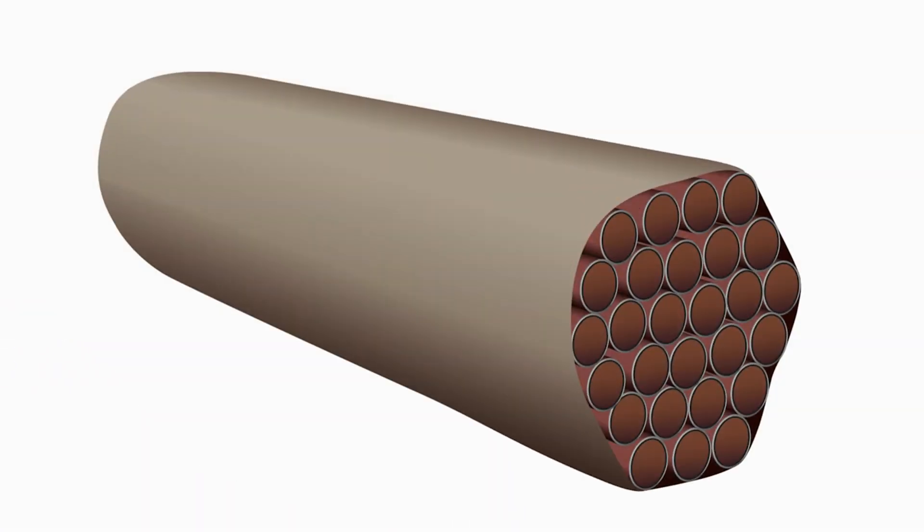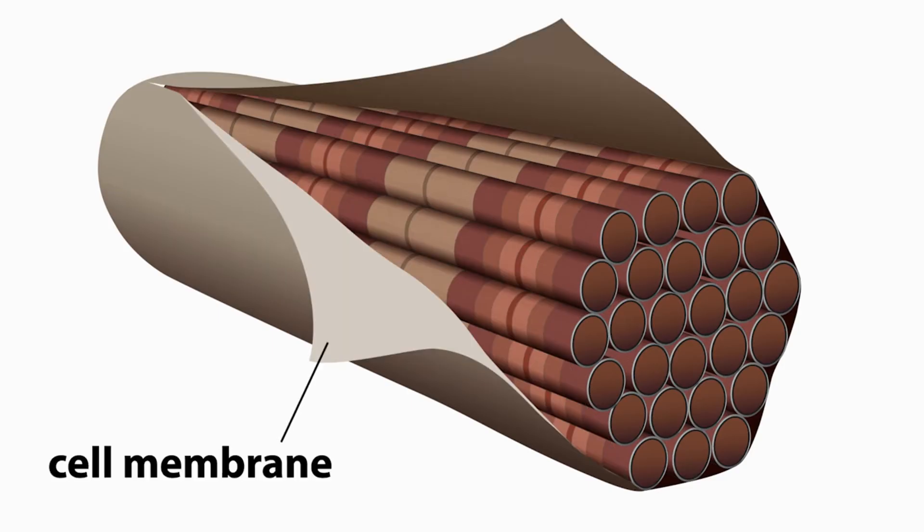If the cell membrane is peeled away, we see that the muscle cells contain several striped looking strands.